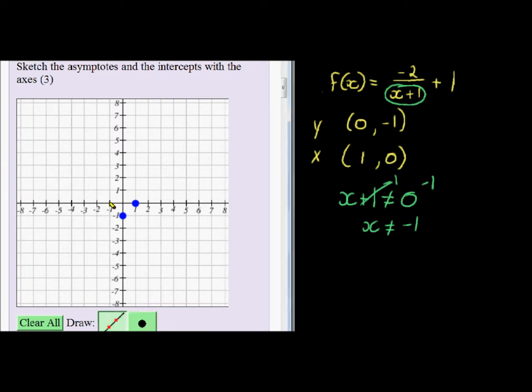At negative 1 we are going to have x equal to negative 1, we are going to have an asymptote.